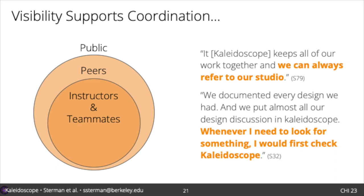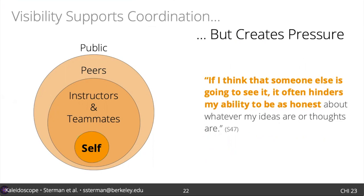We designed the privacy structure of Kaleidoscope to prioritize this kind of visibility. Artifacts were initially private to group members and instructors, but could be made public to peers or to the general public. We initially thought teammates would be willing to share work with each other without issue, due to the benefits of visibility. However, many students would only upload artifacts when they felt they were complete and polished, fearing judgment or feeling that the archival nature of Kaleidoscope made the ideas set in stone. This meant that for intermediate artifacts or artifacts the creator perceived as less successful, the history of the process was incomplete, which compromised future reflection.